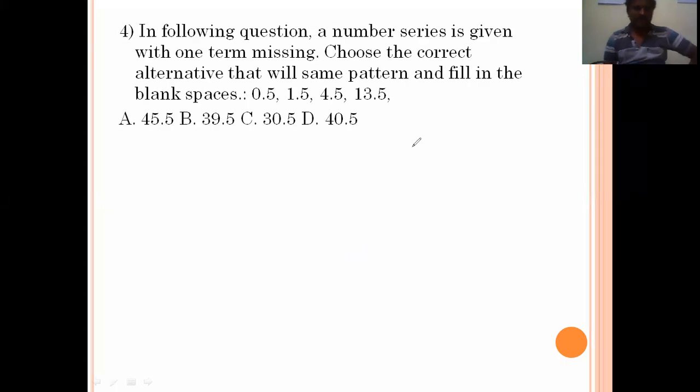In the following question, a number series is given with one term missing. Choose the correct alternative that will fit the same pattern and fill in the blank spaces: 0.5, 1.5, 4.5, 13.5. The difference from 0.5 to 1.5 is 1, 1.5 to 4.5 is 3, 4.5 to 13.5 is 9. 1 times 3 is 3, 3 times 3 is 9, 9 times 3 is 27. So 13.5 plus 27 is 40.5. Option D is the right answer.